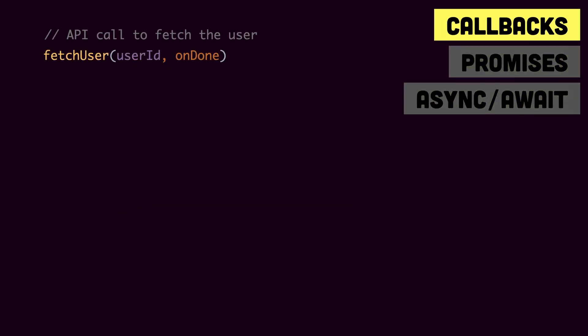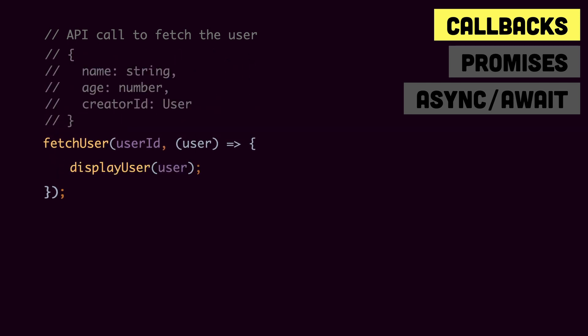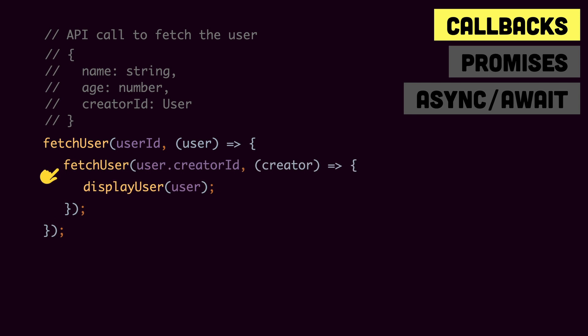First of all we have callbacks. In callbacks we used to have an asynchronous function which would accept a set of arguments and a callback, and it would call the callback once it was done processing. Let's say we have a function called fetchUser and once it is done fetching the user we need to display the user on the screen. For that we can pass a callback where we have displayUser by passing the user object. Now let's say that in the user we get from the API we have the creator ID and we need to display the creator of this user as well. So once fetchUser is done we'll have one more callback called fetchUser, we pass the creator ID, and once we have the creator we display the user with the creator.